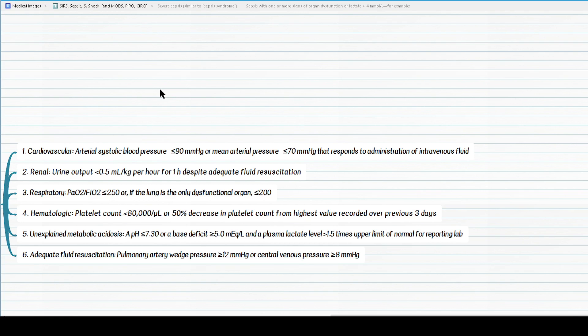So, so far we have discussed the organs including cardiovascular, renal, respiratory, hematologic, as well as acidosis for the criteria of severe sepsis.